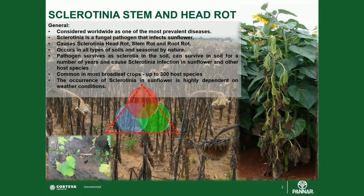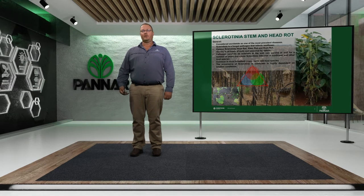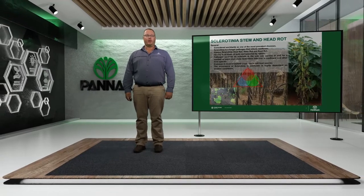As general background, Sclerotinia is considered worldwide as one of the most prevalent diseases. It is a fungal disease that infects sunflower, causing head rot, stem rot and root rot specifically. It occurs on all soil types, is seasonal in nature, has more than 300 hosts, and the type of infection in sunflower is very specific to weather conditions.